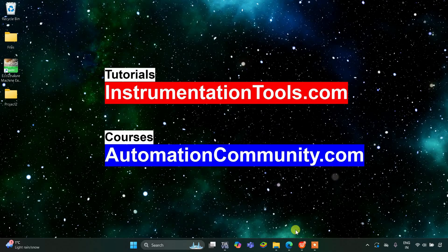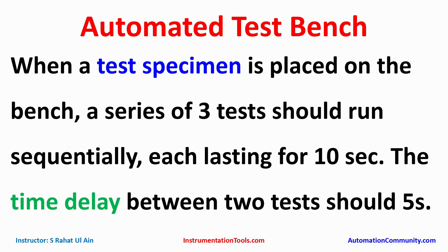Hello everyone, welcome to Automation Community. Today in this video we are going to discuss an example about an automated test bench. When a test specimen is placed on the bench, a series of three tests should run sequentially, each lasting for 10 seconds. The time delay between two tests should be 5 seconds, and there will be a sensor that will detect the presence of a test specimen.